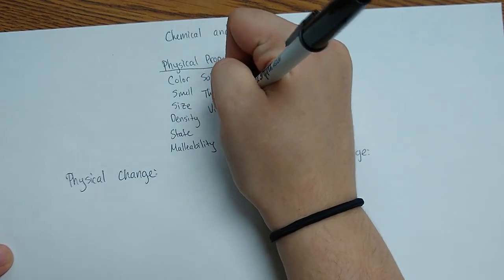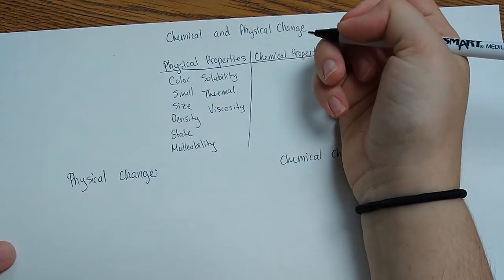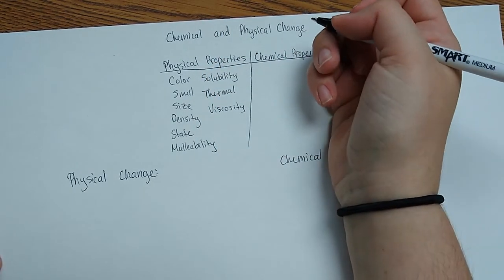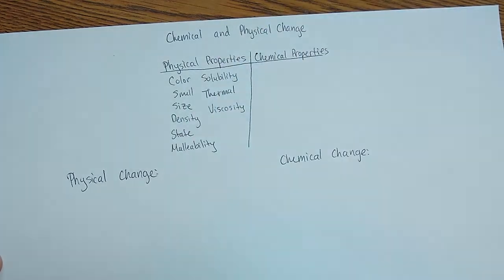which is how thick something is. Something like molasses has a very high viscosity, while something like water has a very low viscosity.